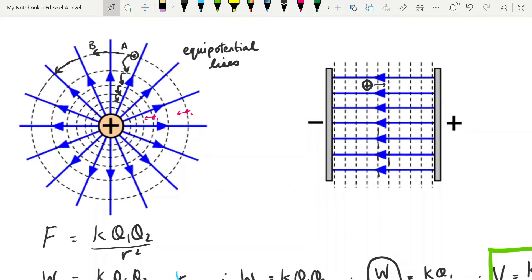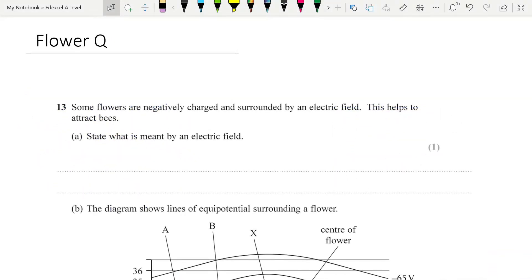A word on equipotential lines, if you have to draw them, you must make sure that you are drawing them perpendicular to the field lines because they will always be. A couple of years ago, Edexcel rather infamously produced what has become known as the flower question for electric fields. And so I thought it would be a good idea for us to go through this question so you see the kind of thing you can be asked about electric fields in particular.